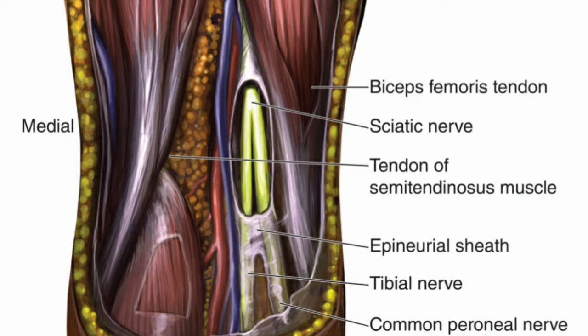As the sciatic nerve descends towards the knee, the two components eventually diverge just proximal to the popliteal fossa, giving rise to the tibial and common peroneal nerves. This division of the sciatic nerve usually occurs between 5 and 12 centimeters proximal to the popliteal fossa crease.